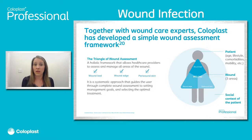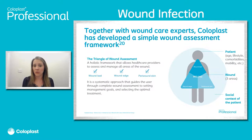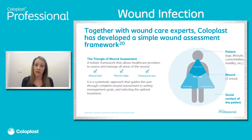Coloplast developed the Triangle of Wound Assessment, which is a fantastic framework that looks not only at the patient as a whole, but at the three areas of the wound — the wound bed, the wound edge, and the peri-wound skin — as well as the social context around the patient. These are all the things we need to look at to identify the approach to managing this patient and creating the optimum healing environment.